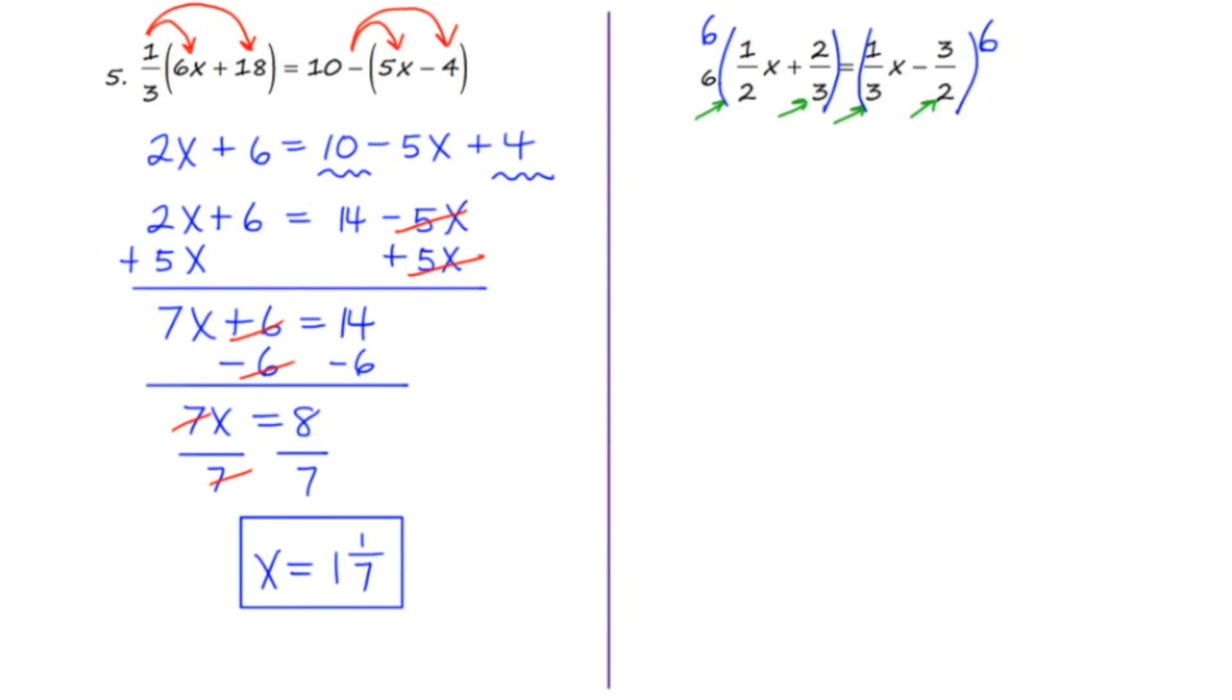In multiplying both sides by 6, I'm going to need to use the distributive property again. So I'm going to go ahead and draw these little arrows. 6 times 1/2 x is 3x. 6 times 2/3 is 12/3 or 4. Moving to the right hand side, 6 times 1/3 x is 2x. And finally, 6 times negative 3/2 is negative 18/2 or negative 9.